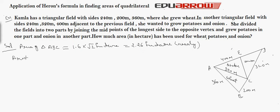Now we will calculate the area of triangle ACD. So we know that semi perimeter is equal to 240 plus 400 plus 320 divided by 2, is equal to 480 meters.